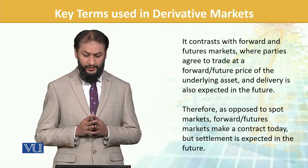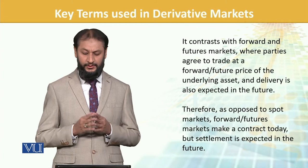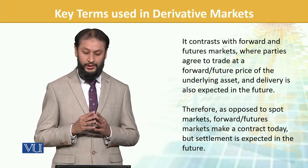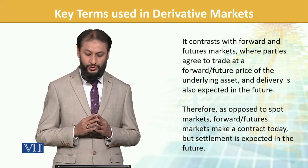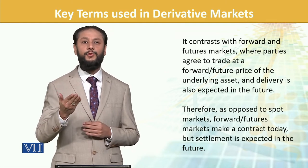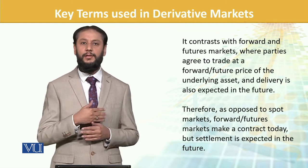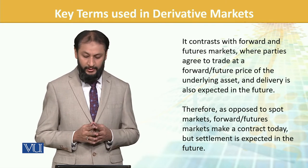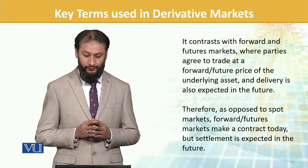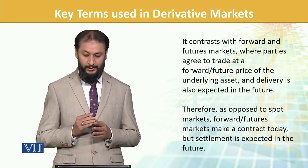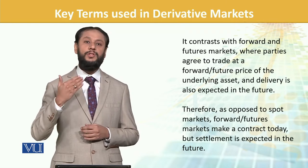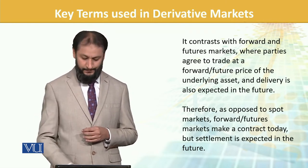In contrast to forward and future markets, where parties agree to trade at a forward or future price, the delivery expected is going to be in the future — that could be 30 days or any period of time. Therefore, as opposed to the spot market, forward and future contracts are made today but settlement is done in the future.